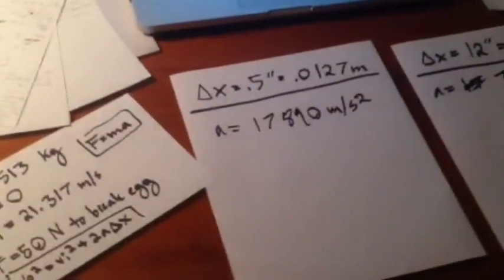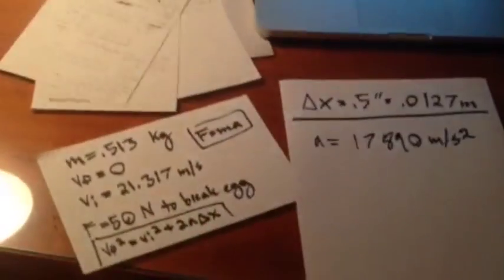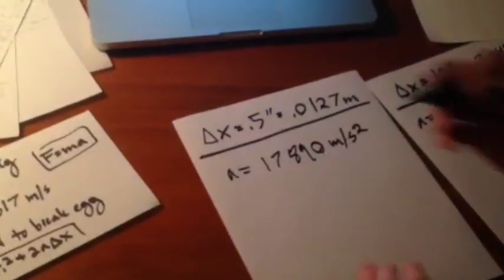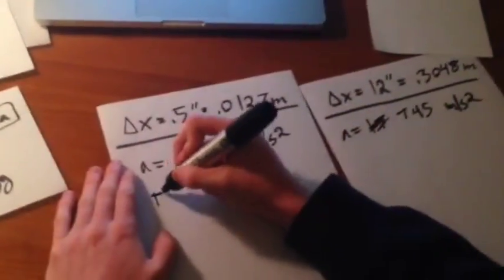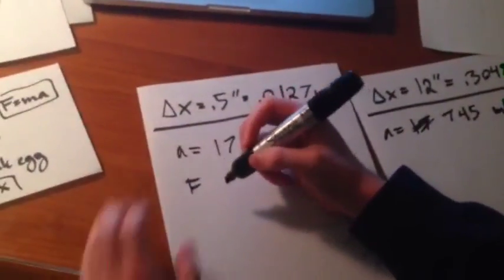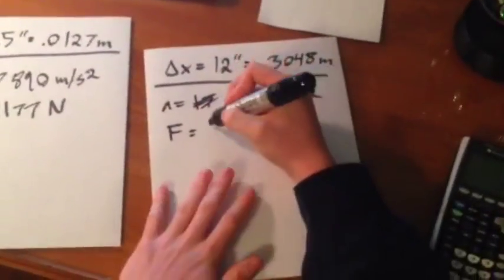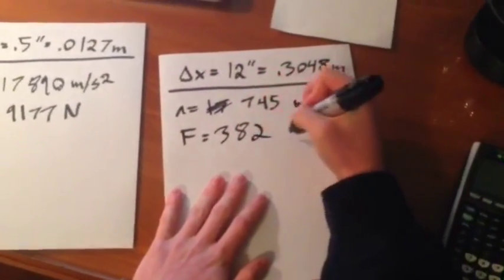So, using these two numbers, we then used F equals MA to calculate the force upon the eggs, which came around a whopping 9,177 newtons for the worst case scenario. And for the best case scenario, the force became around 382 newtons, significantly less.